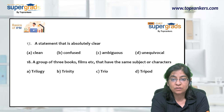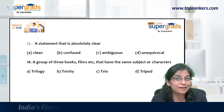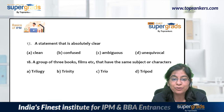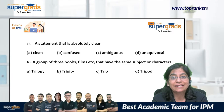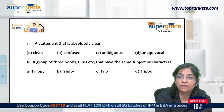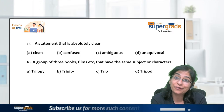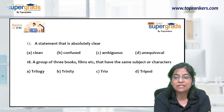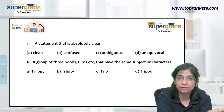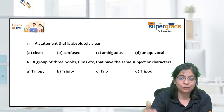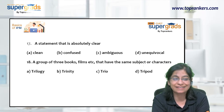Next: 'A statement that is absolutely clear.' Clean should be ruled out — surroundings can be clean but statements are not called clean. Confused is the contrary word, so ruled out. Ambiguous means something that is not clear — contradictory to the given information, ruled out. Unequivocal — 'equivocal,' like ambiguous, means not clear. So unequivocal is the opposite, meaning something crystal clear. The answer is option D — unequivocal.